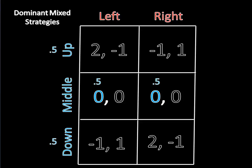Now take a look at player 1's payoffs for playing middle. They're both 0. But player 1 can mix between up and down using that 50-50 probability distribution and earn a payoff that is greater regardless of whatever player 2 does. In other words, this mixed strategy between up and down strictly dominates middle.